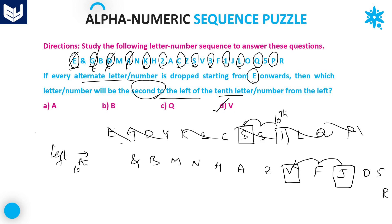V is the right answer — option D. We have to drop each and every alternate letter or number starting from E onwards, then look at the remaining letters or numbers. In the remaining elements, the 10th from the left is J, and the 2nd left of that is V. Option D is the right answer.